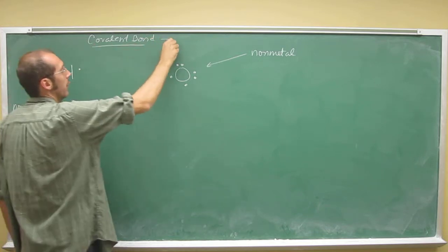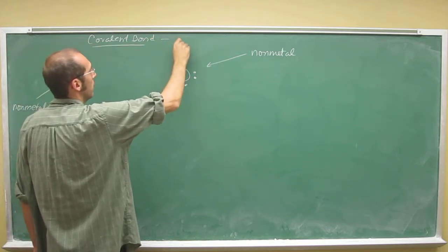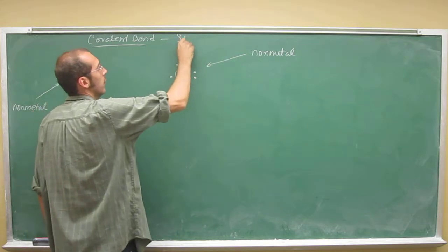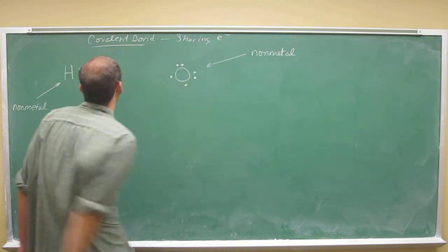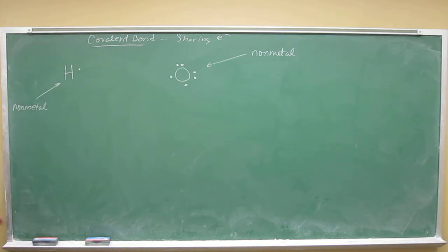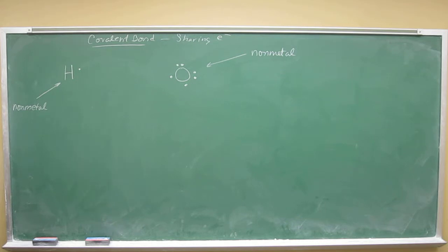And unlike an ionic bond, a covalent bond is the sharing of electrons. So these guys aren't going to actually transfer the electron like the last problem we did. They're going to share it.